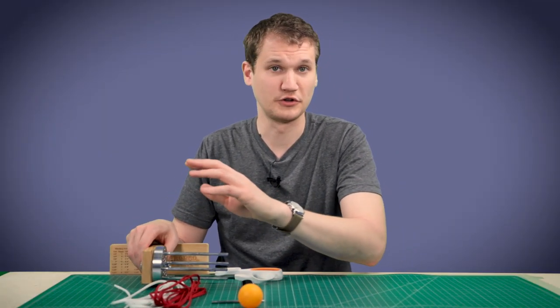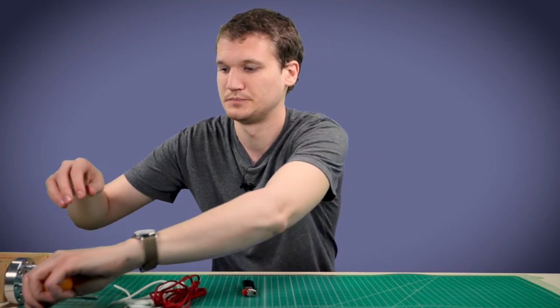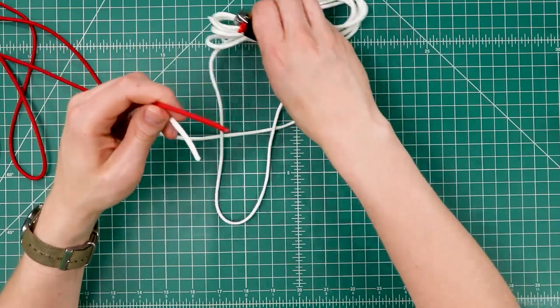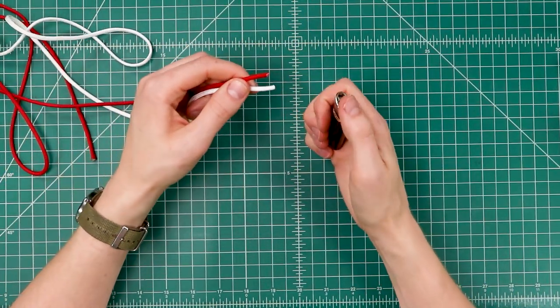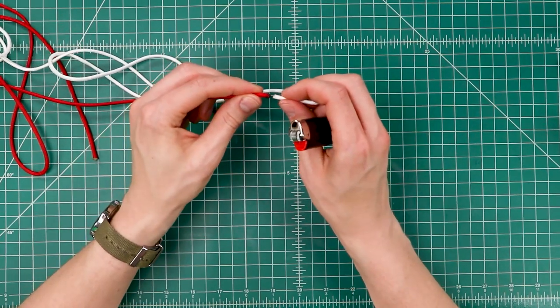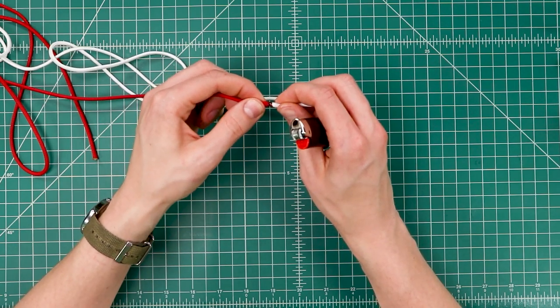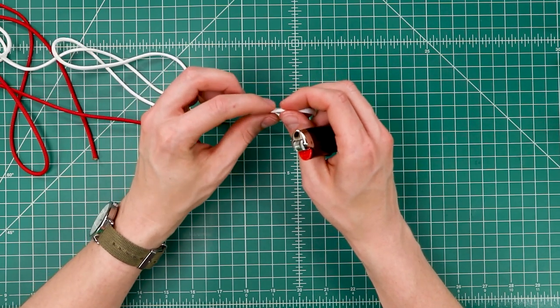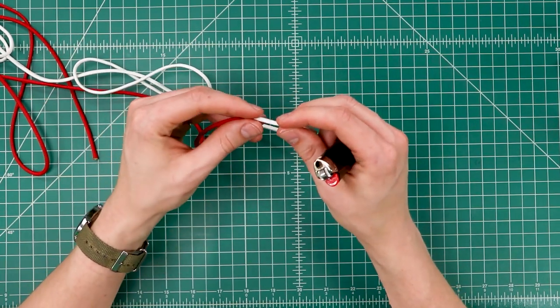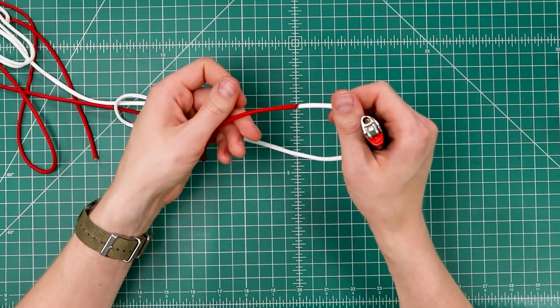To start off, we're going to meld our two cords together. Find one end of each and just melt them both at the same time in the flame, and then while those are still hot, press them together. Before they're completely solidified, you're going to want to roll your fingers over them or use pliers because you don't want any sharp edges to catch when we're tightening down our monkey fist.